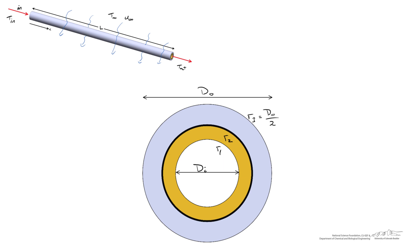We also know some material properties. The inner conductive layer has a thermal conductivity of k1, and the outer conductive layer has a thermal conductivity of k2. Between the two layers there is a thermal contact resistance, and note that this has dimensions of meters squared degrees centigrade per watt.